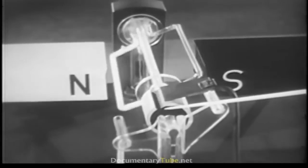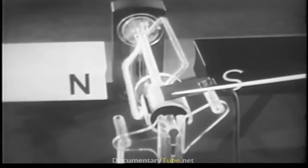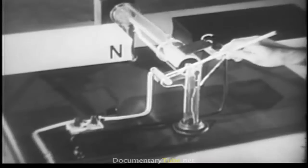These are the brushes. They remain stationary while the wire loop and segments rotate. Every time the loop rotates a half turn, each segment disconnects from one brush and connects with the other. The brushes are wired to the source of electric power, the battery.